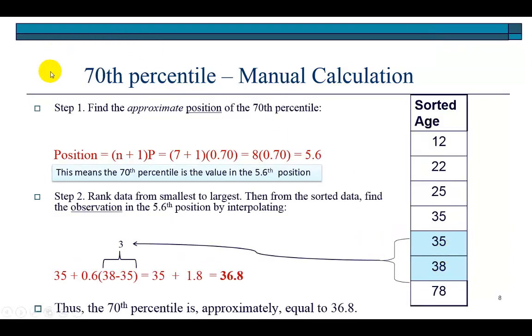How about the 70th percentile? This is a little tricky because when you find the position, you're going to get a fraction. Position equals (n+1)P = (7+1)(0.70) = 8(0.70) = 5.6. It tells us the 70th percentile is the value in the 5.6th position. So we're going to find the value that lies in the 5.6th position. Looking at the sorted data sets, the fifth position is number 35.